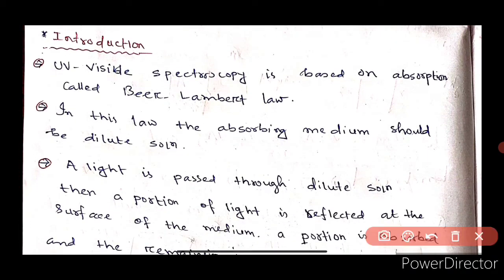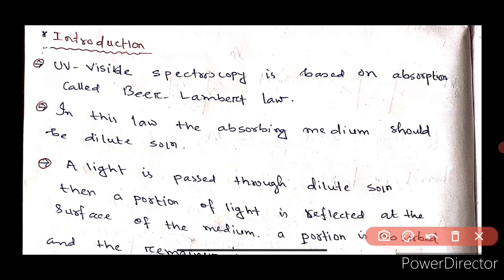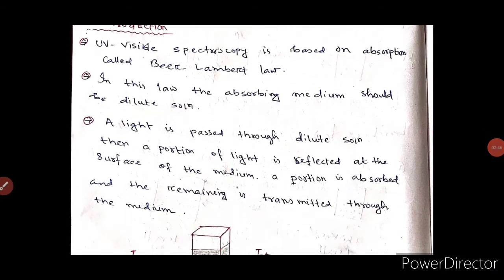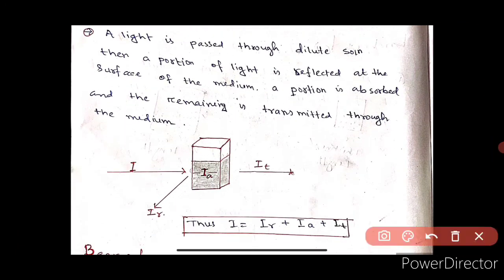UV-visible spectroscopy is based on absorption called Beer's and Lambert's law. In this law, the absorbing medium should be a dilute solution. When light is passed through a dilute solution, a portion of light is reflected at the surface of the medium, a portion is absorbed, and the remaining is transmitted through the medium.